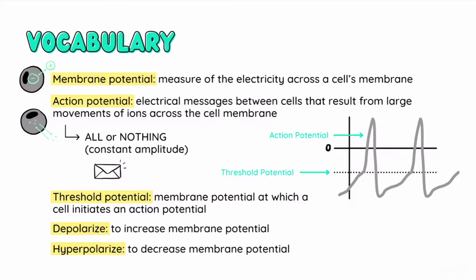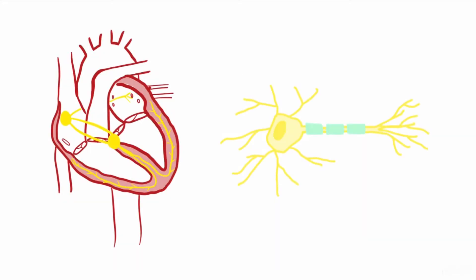Very few cells in the body can initiate action potentials. The hallmarks of these include pacemaker cells in the heart, cardiomyocytes, and neurons. Today, we will focus on the heart.